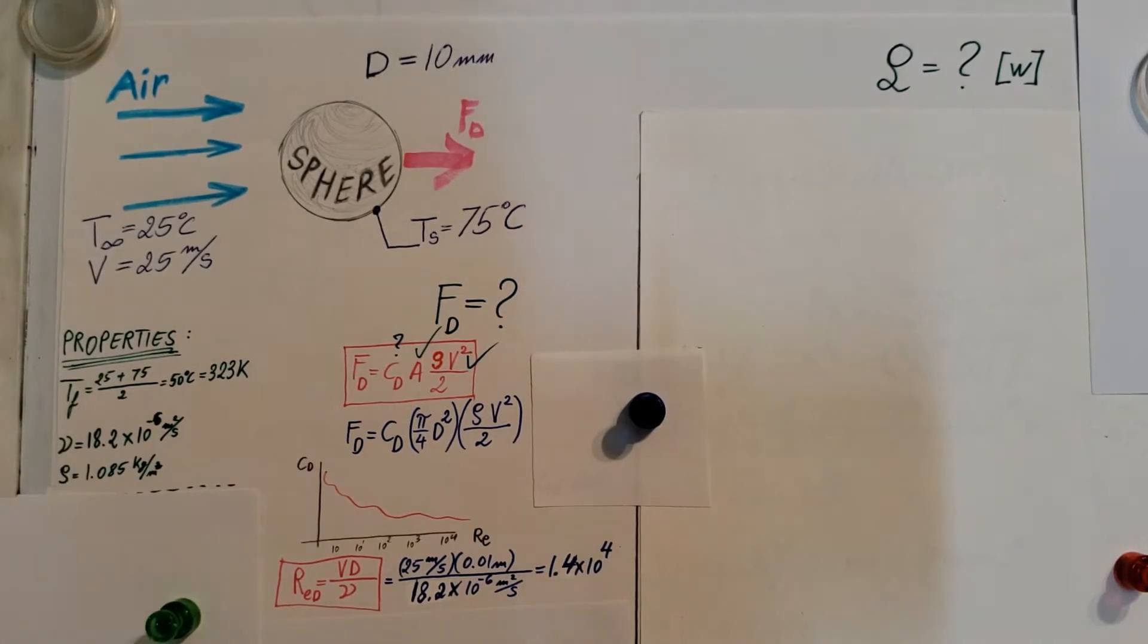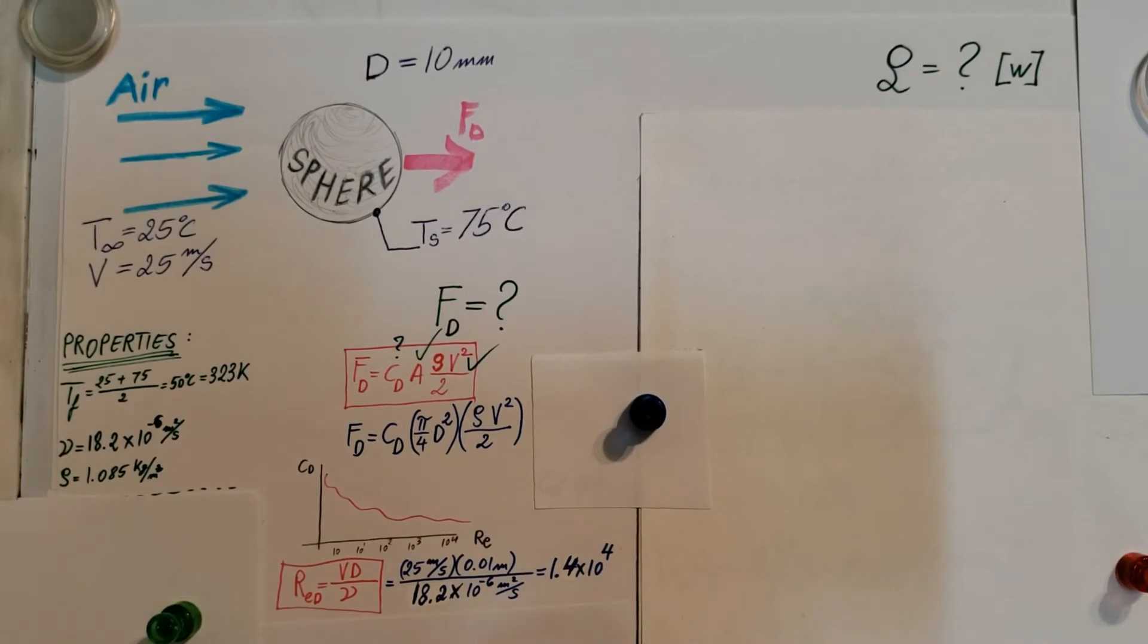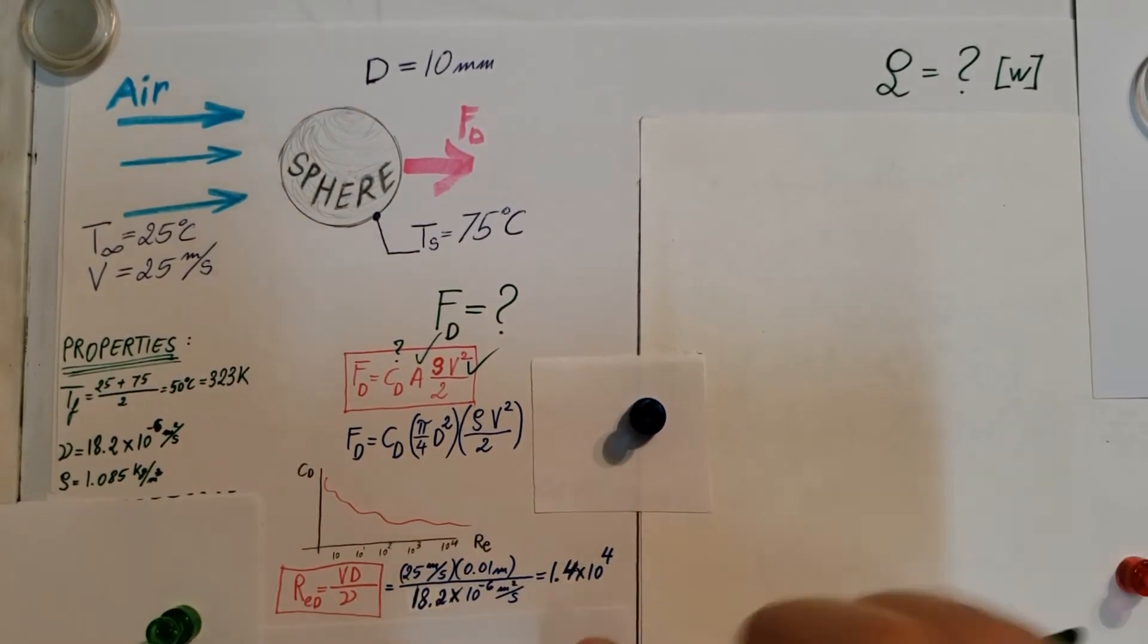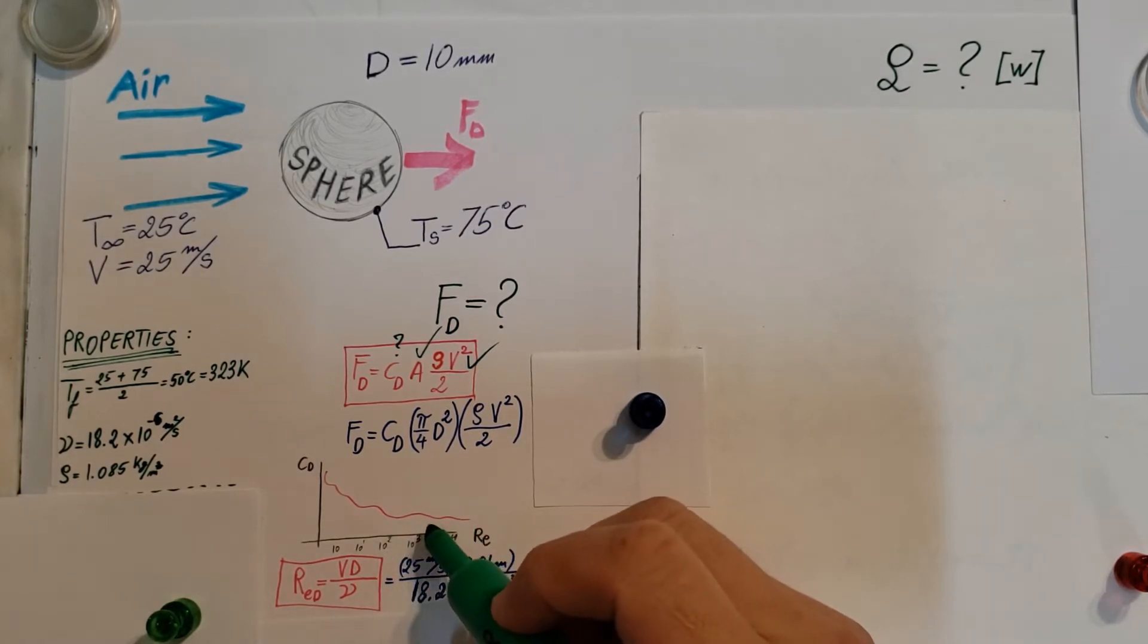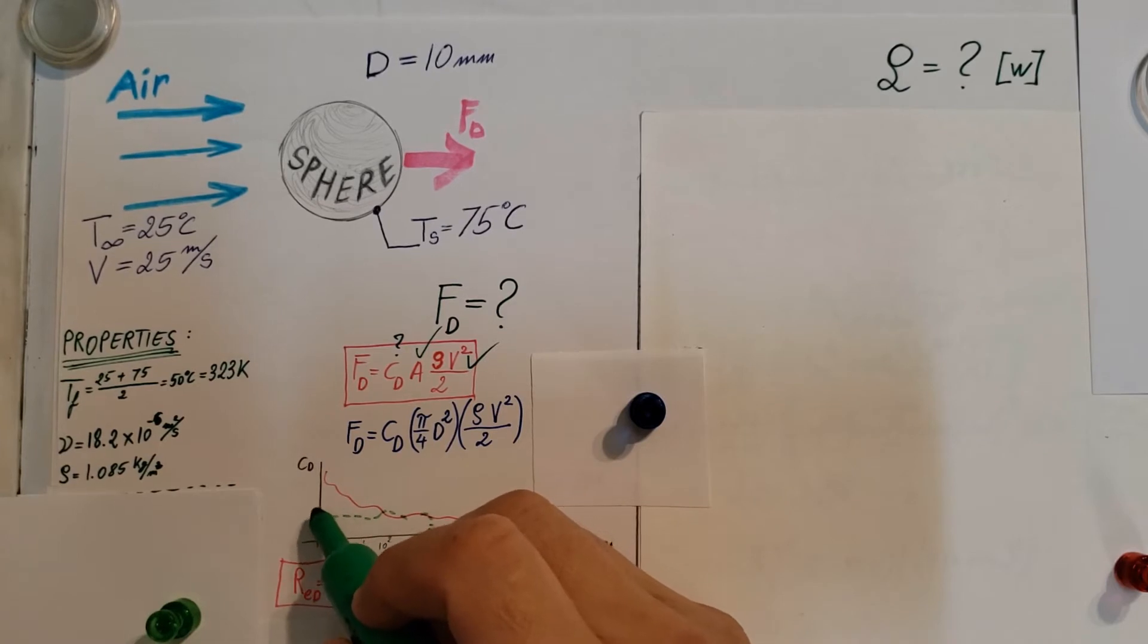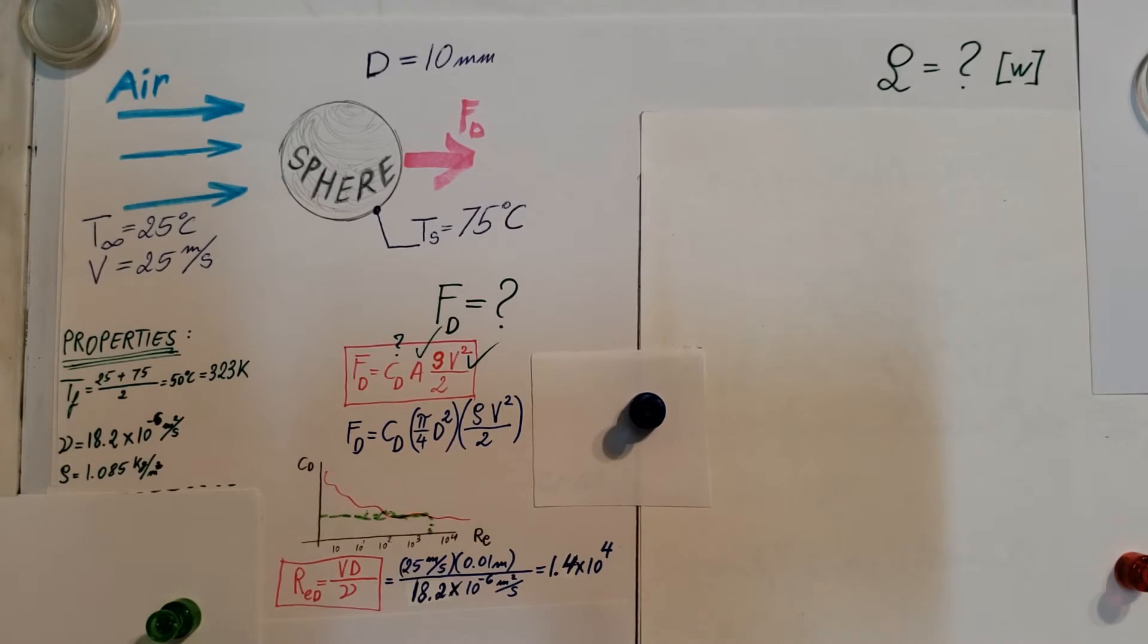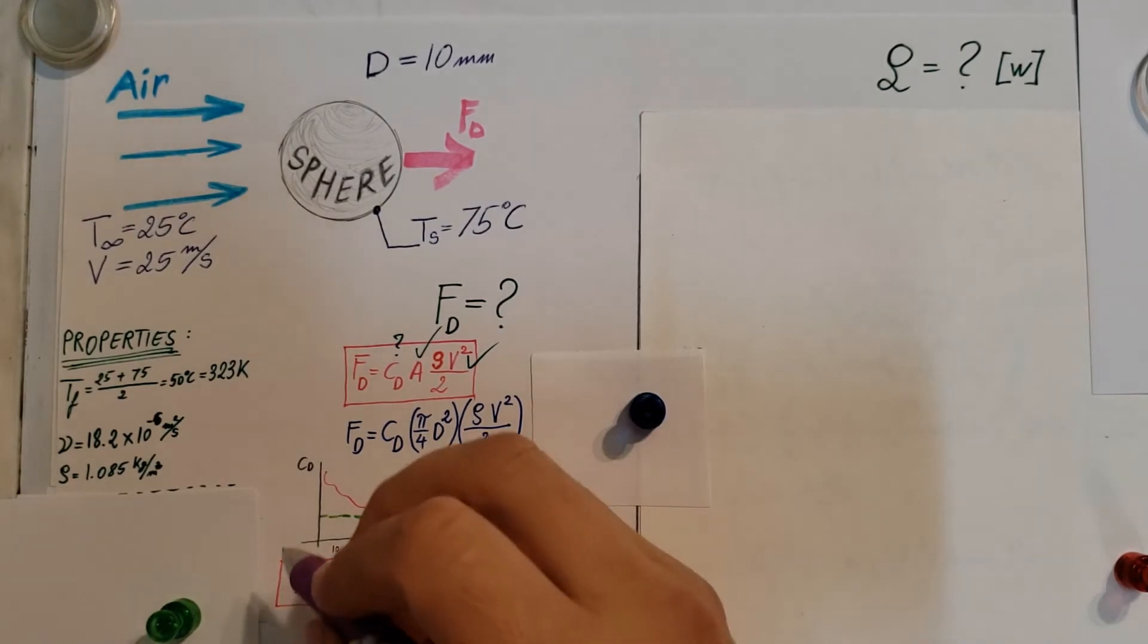Now coming back to this chart right here, 1.4 times 10 to the fourth. Well that would be if I look on my chart, well this is not really accurate okay, so I'm just roughly drawing it here. Yeah, you're going to have to check that in your own textbook. I can't show you the charts and everything for copyright reasons, so there it is. But the numbers are not copyright, right? Those are properties of materials.